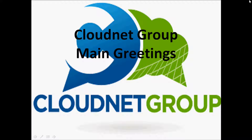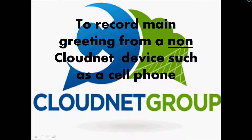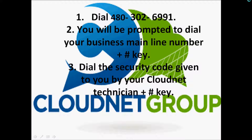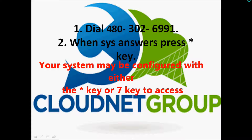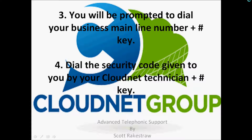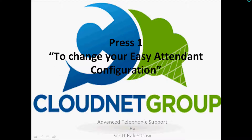Here are your steps to dial in and record the main greetings. From a non-CloudNet device such as a cell phone, dial 480-302-6991. You'll be prompted to dial your 10-digit business mainline phone number followed by the pound key, then the security code given to you by your CloudNet technician followed by pound. To record from a CloudNet phone on your network, dial the same number 480-302-6991, press the star key when the system answers, then enter your 10-digit mainline number, pound, your security code, pound. Once in the system, press digit 1 to change your Easy Attendant configuration.